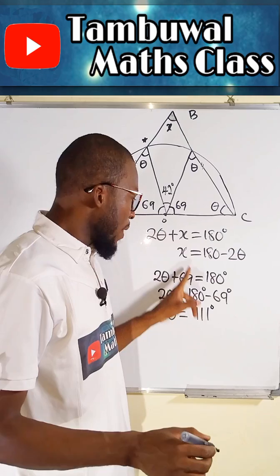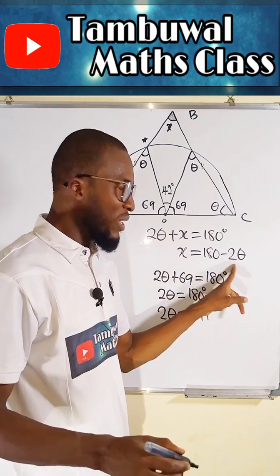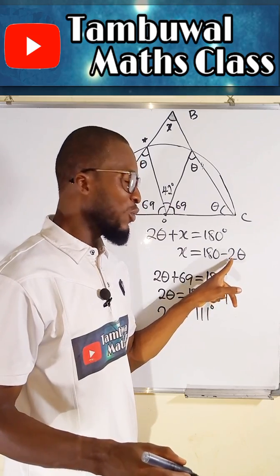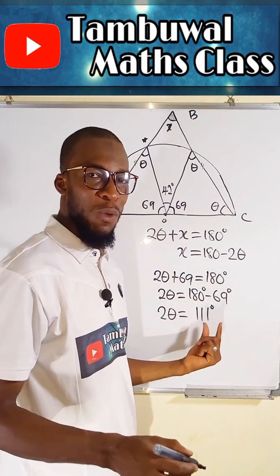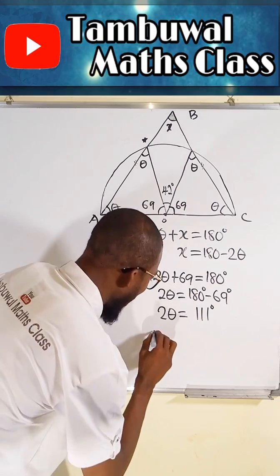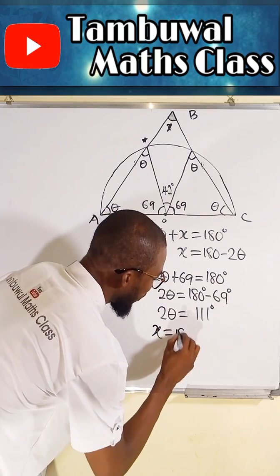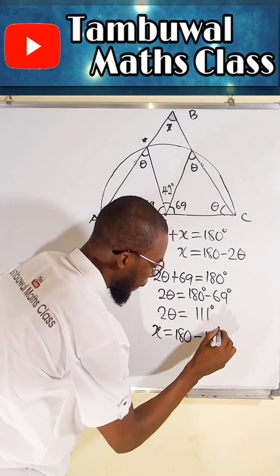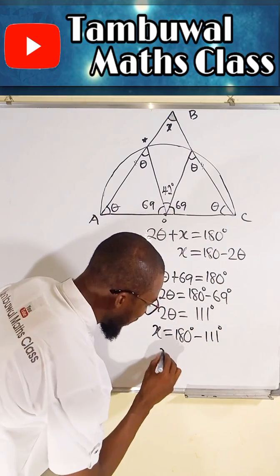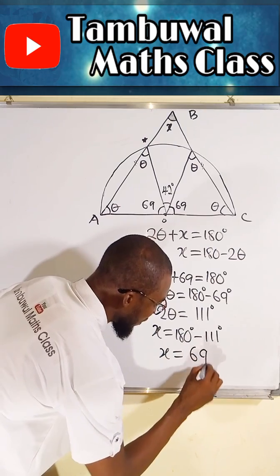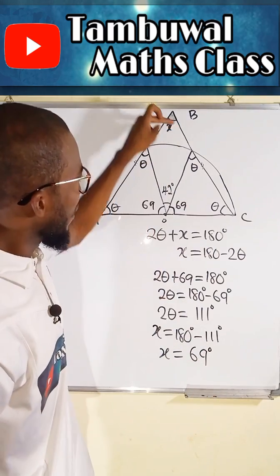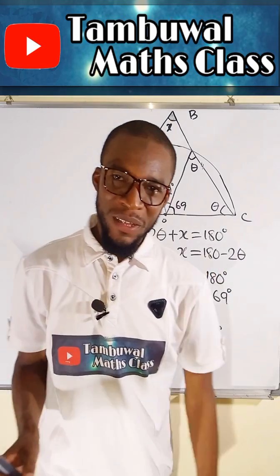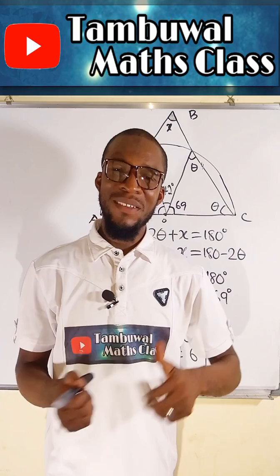To find X we substitute back: X is equal to 180 minus 2 theta. And since 2 theta is now 111, X is equal to 180 degrees minus 111 degrees. Finally, X is equal to 69 degrees. Therefore, this missing angle that we are looking for is 69 degrees. Thank you for watching, do have a nice day.